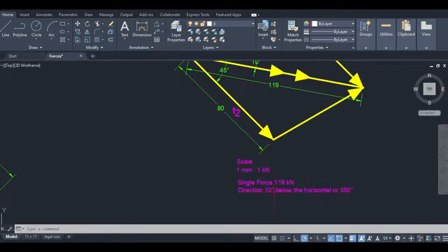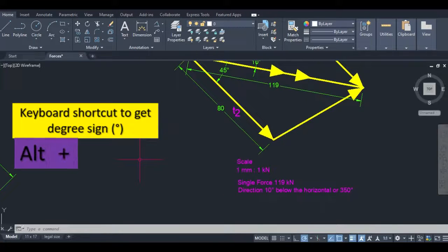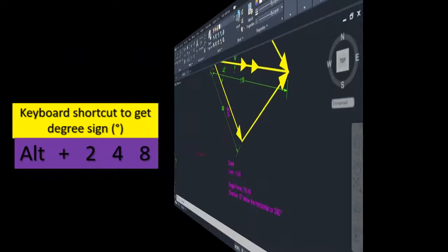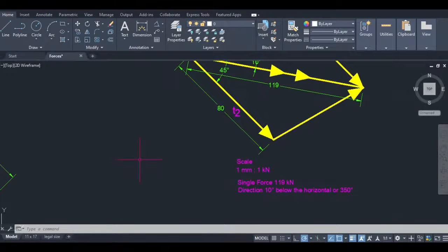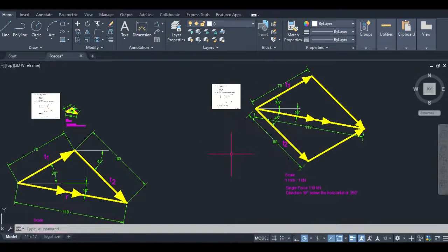And for anyone who wants to know how I got the degrees sign in AutoCAD, I simply use the keystroke Alt and then 0176 for it. So there you have it, we just proved that when we have two forces acting on an object or a system, we could actually use any of the methods.